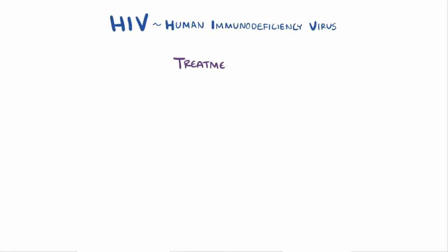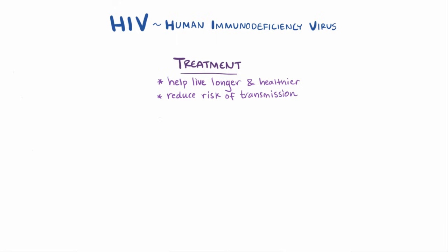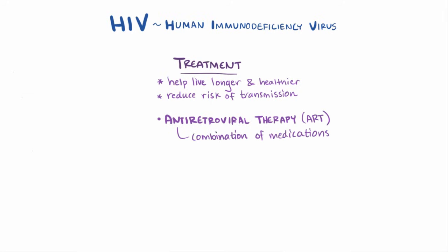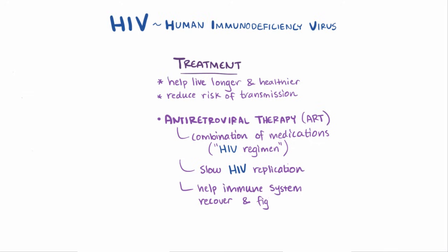There is currently no cure for AIDS. Treatment, however, can help somebody with AIDS live longer, healthier lives and help reduce the risk of transmission. The primary method is antiretroviral therapy, or ART — not a single medicine but a combination of medicines known as an HIV regimen. These help slow down HIV replication, giving the immune system a chance to recover and fight off other infections more effectively.